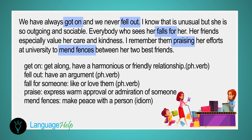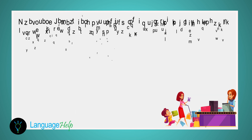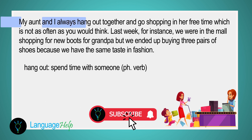'To get on' is the British way to say 'get along' — to have a harmonious or friendly relationship. 'To fall out' is to have an argument. 'To fall for someone' is to like or love them. 'To praise' is to express warm approval or admiration of someone. 'To mend fences' is an idiom meaning making peace with a person.